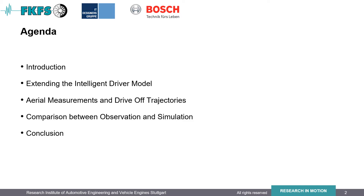I divided this presentation into five parts. I'd like to begin with a short introduction of the areas where we use SUMO and why we were in need of extending the intelligent driver model. This leads me to the first major issue of my presentation where I'll focus on the different components of the extended IDM. After that I'll introduce the aerial measurements which were carried out at a signalized intersection in Stuttgart, Germany. The extracted drive-off trajectories are then compared to those of different car following models in SUMO. And finally in the last part I'd like to discuss the findings.